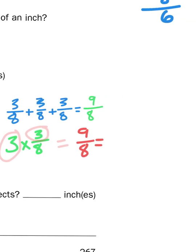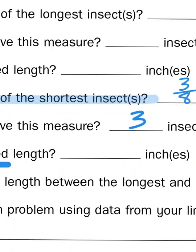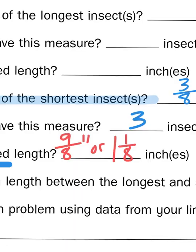Just by looking at the nine compared to the eighths, I know that I can get at least one group of eight eighths out of nine, because nine minus eight is one. So nine eighths can be represented as one and one eighth. So what is their combined length? Well, either nine eighths of an inch or one and one eighth. And that's how you would solve that problem or that set of problems.